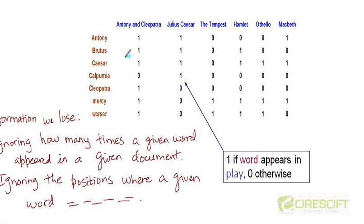So for example, we are losing track of which position, at which position Brutus appeared in the play Antony and Cleopatra. So we lose this positional information and we lose this count or this frequency information when we generate this matrix.